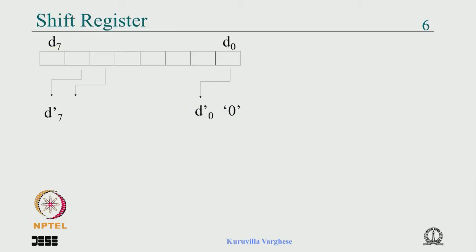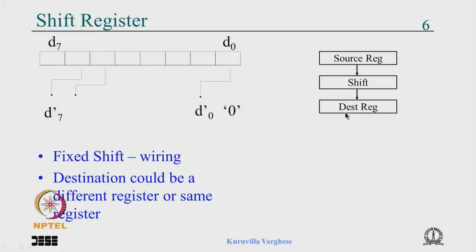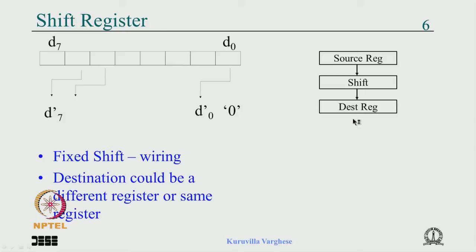We looked at the shift register as an example. Most of you would have coupled shift with register, but you should know that there is a register and then there is a shift operation. When you want to shift by one bit, it is a matter of wiring: d6 goes to d7, d0 goes to d1, and you append a 0. It is just a wiring, and in most practical applications the destination will be a different register because you have a data path where data goes through a pipeline.